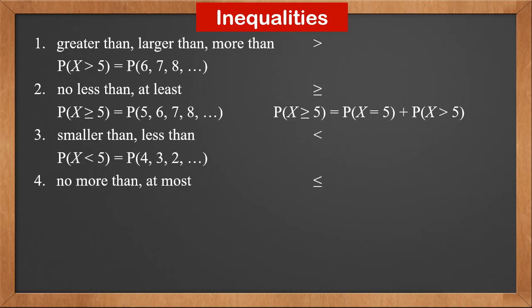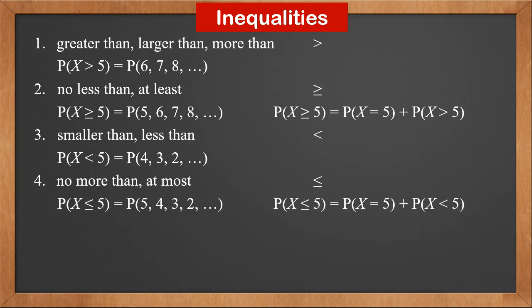If you see 'no more than' or 'at most', we use the less than or equal to operator. P(X ≤ 5) includes x = 5 and below, which equals P(X = 5) plus P(X < 5).